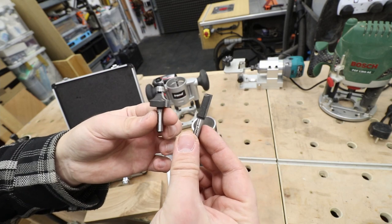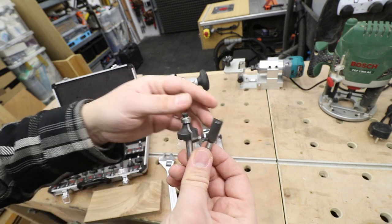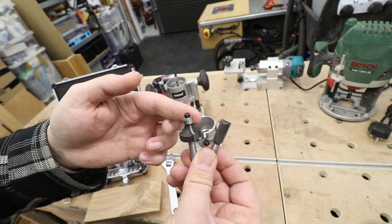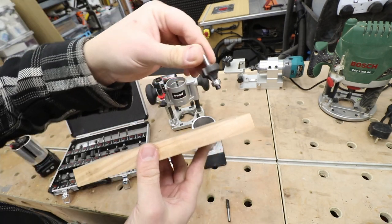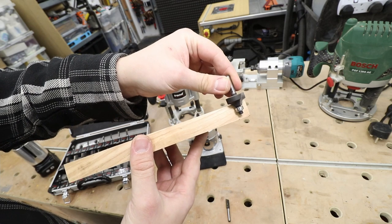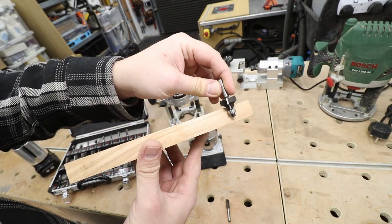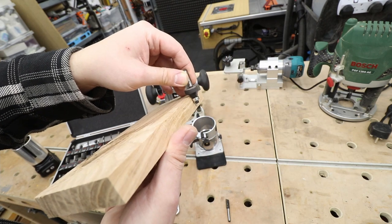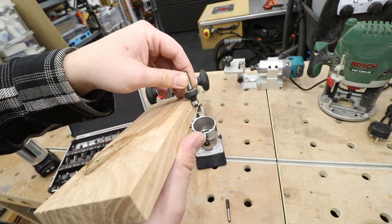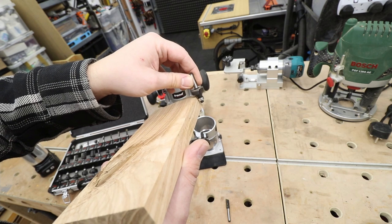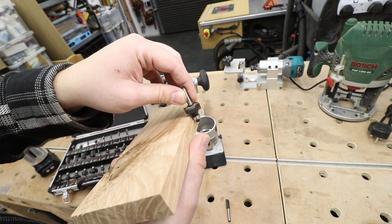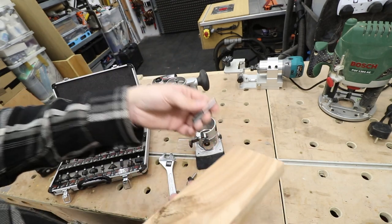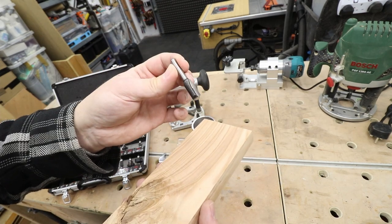I want to mention two different types of routing bits. One will be a bearing guided like this one. What the bearing does is it actually guides the router on the surface of the edge of your board like so. Then you can make the cut—for example, this is a round over bit, so you can round over this edge and the bearing is guiding the router on the edge of your workpiece.